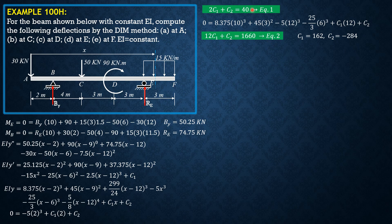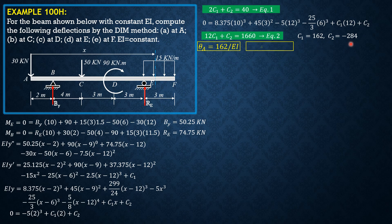I want you to verify this — you may eliminate C sub 2, then solve for C sub 1 and C sub 2. Having found these constants, we interpret C sub 1 as theta A and C sub 2 as delta A. Therefore, theta A equals 162/EI and delta A equals negative 284/EI.